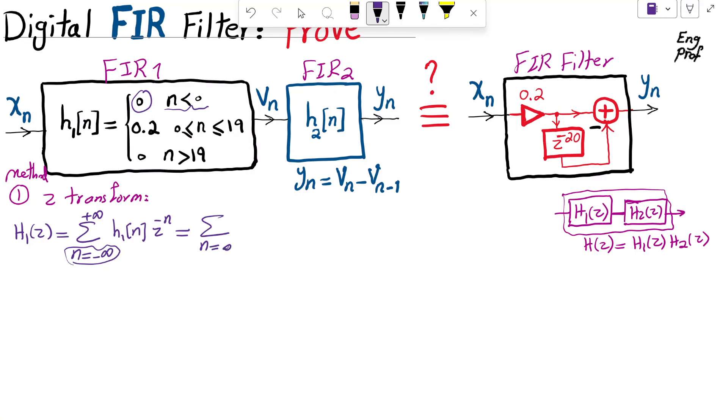But then again, for positive indices above 19, H1 and again 0. So I'm not going to care anything above 19 index. And then it will be 0.2 Z to the negative N. Well, 0.2 is a constant. And so it's outside the summation. And then it become as simple as 1 plus Z minus 1 plus Z minus 2 plus Z minus 3 plus dot dot dot up to Z minus 19.